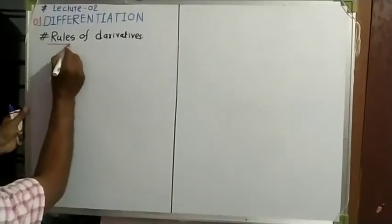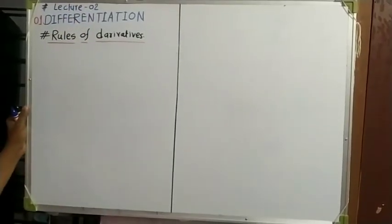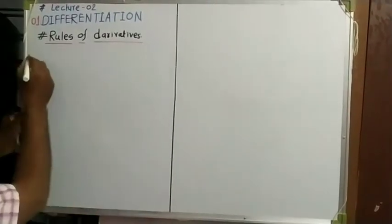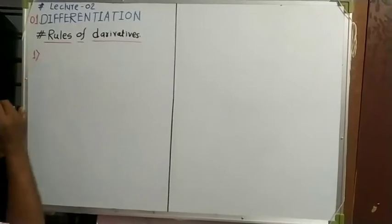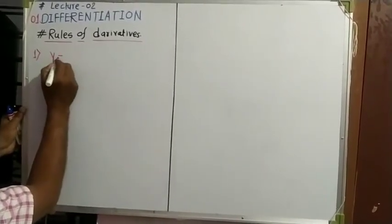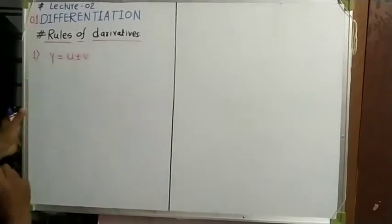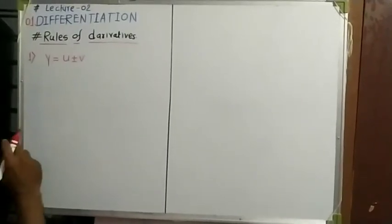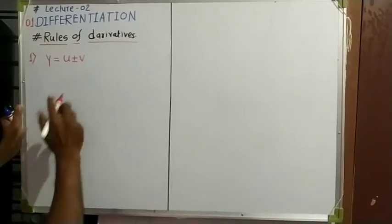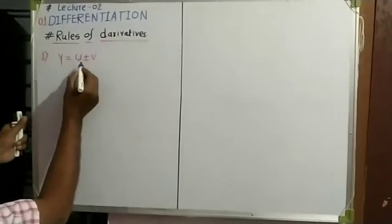Rules of variation, lecture two: differentiation rules of derivatives. First rule: if the function y is equal to u plus or minus v, where u and v are functions of x, and the derivatives are called differentiation with respect to x.